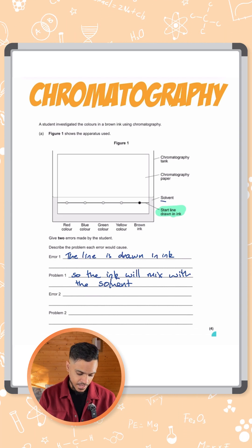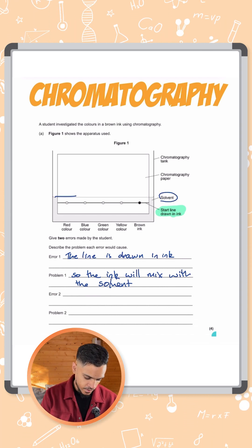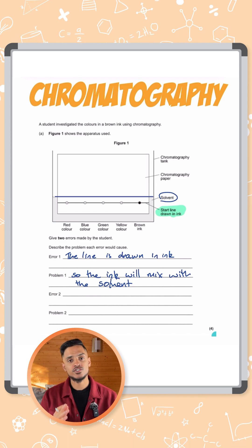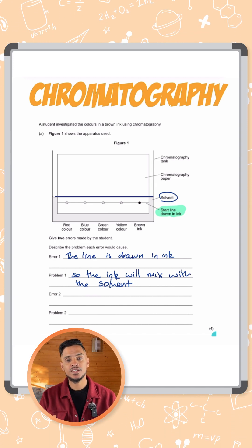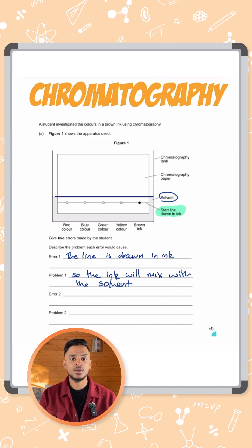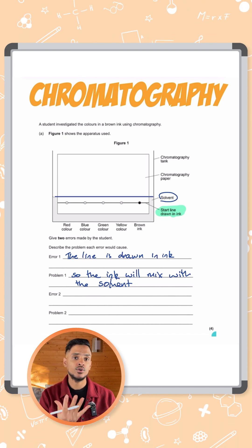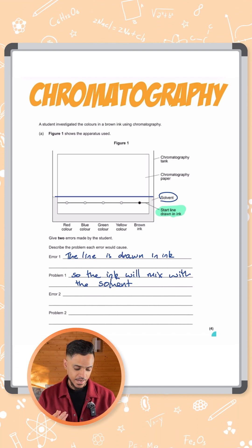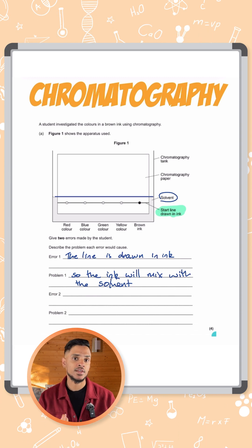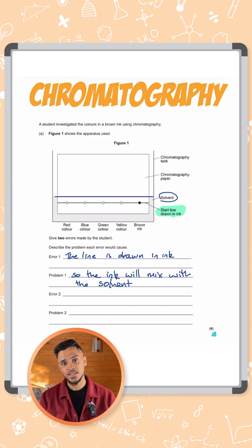The other thing is that the solvent line, if you look here, it's above the start line. That shouldn't happen. The solvent line needs to be below the start line because what's going to happen is the paper is going to absorb that solvent up it and carry the different components of the ink or the dyes with it.